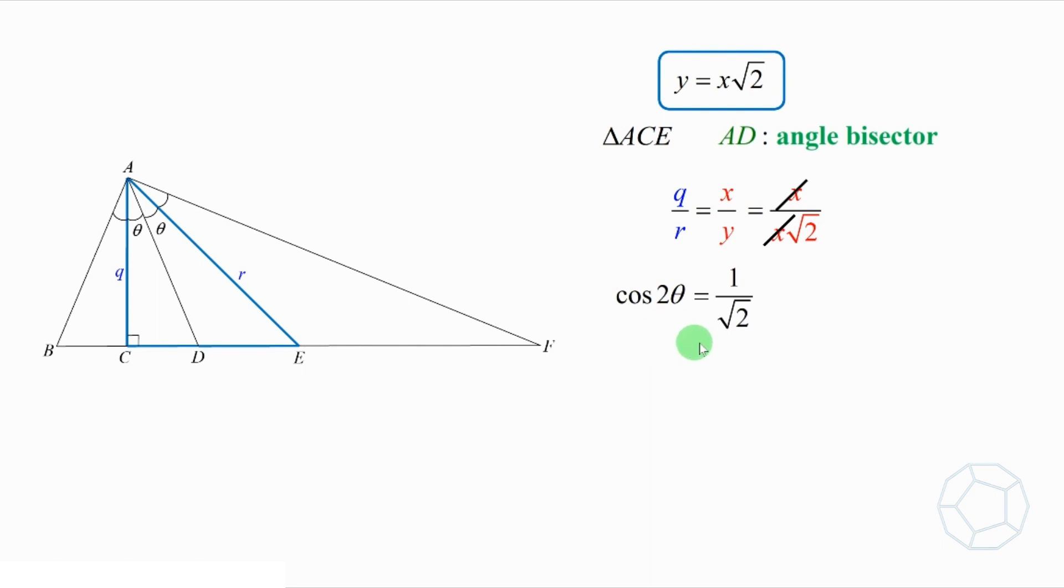Therefore, cosine 2 theta equals 1 over square root 2. That is, 2 theta equals 45 degrees. The value of angle BAF equals 4 theta, which is equal to 90 degrees. We get a large right-angle triangle as the outcome.